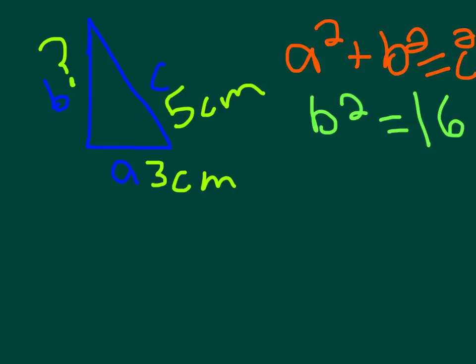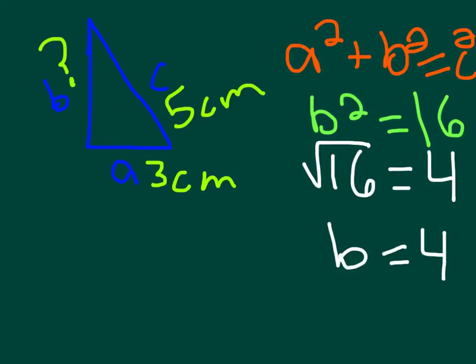Since we know that b squared is 16, to find the value of b we have to find the square root of 16. We know that the square root of 16 is 4. So 4 gives us the value of b which means it is 4 centimeters long.